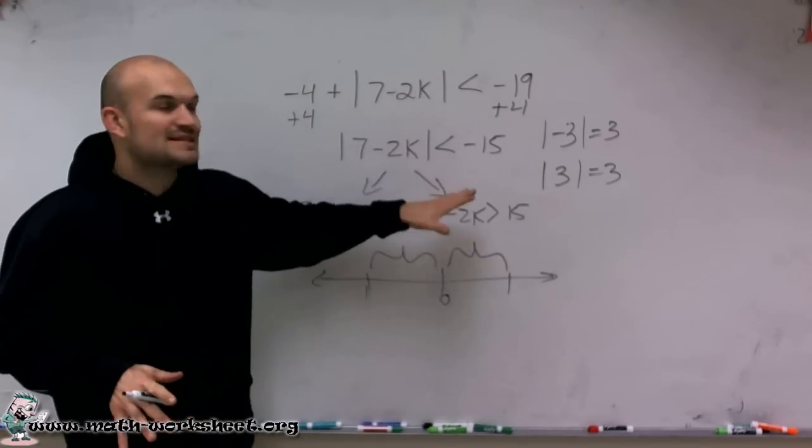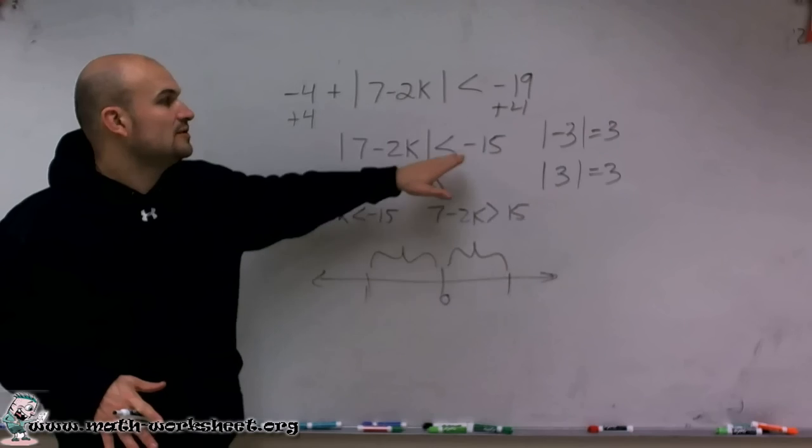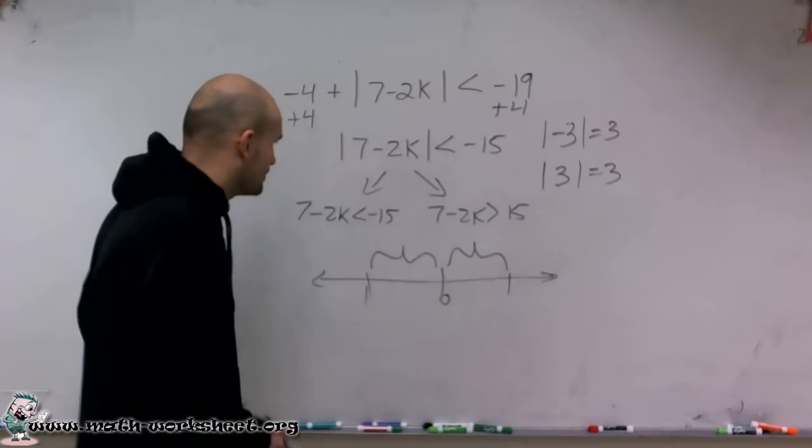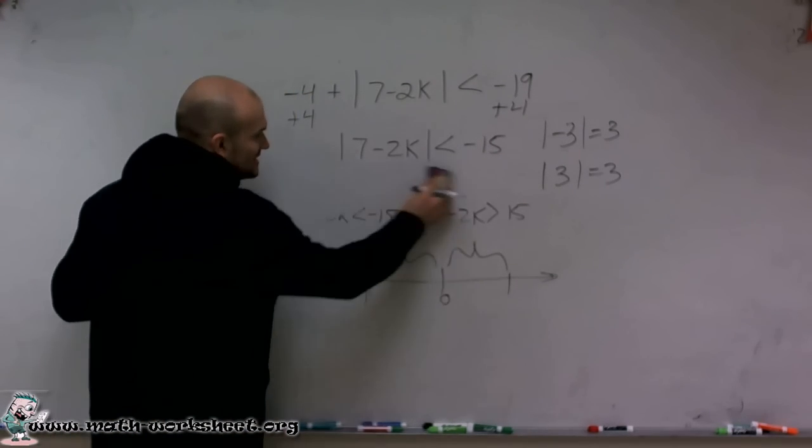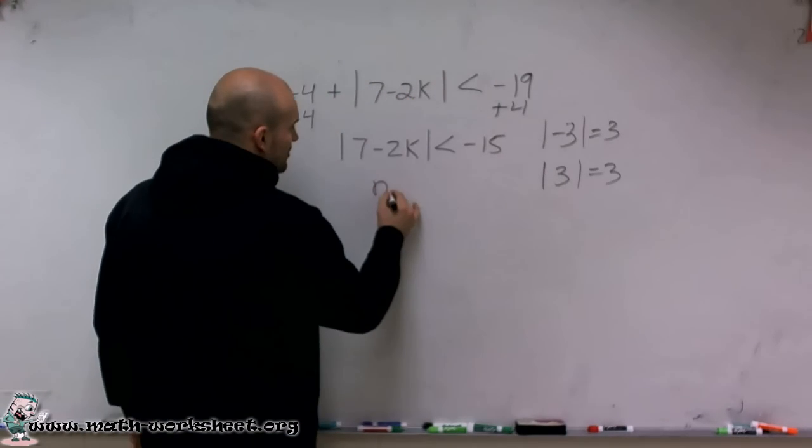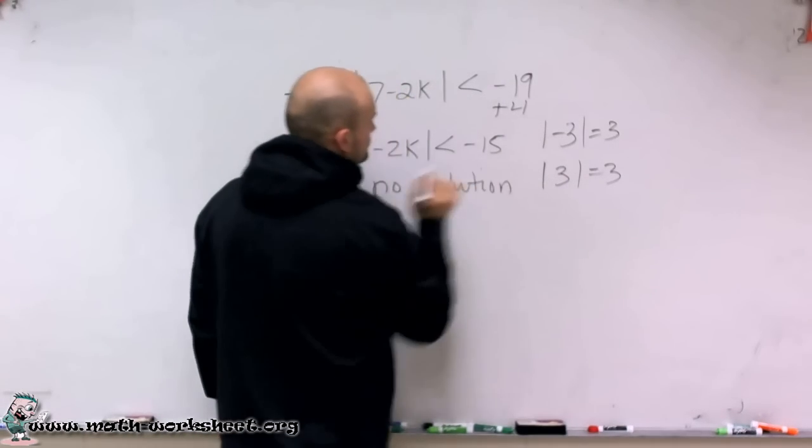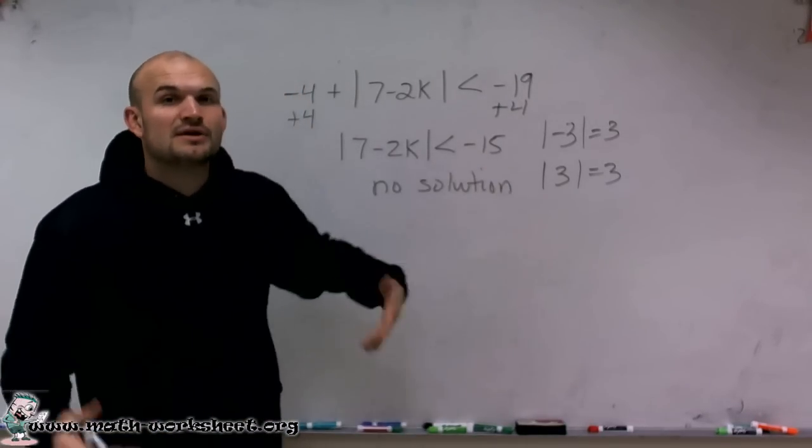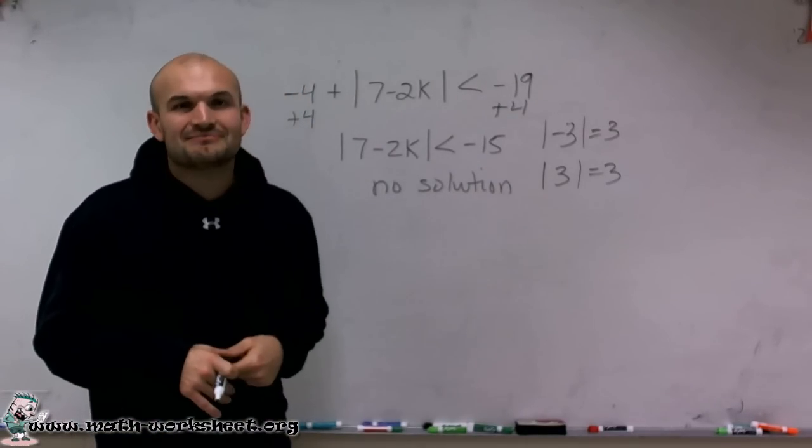Therefore, this problem is impossible for us to find a value that when taking the absolute value will get a negative number. So without even having to go through this case study, we already know that this problem has no solution. So anytime you isolate your absolute value, whenever you have a negative number, you now know there's no solution. Thanks.